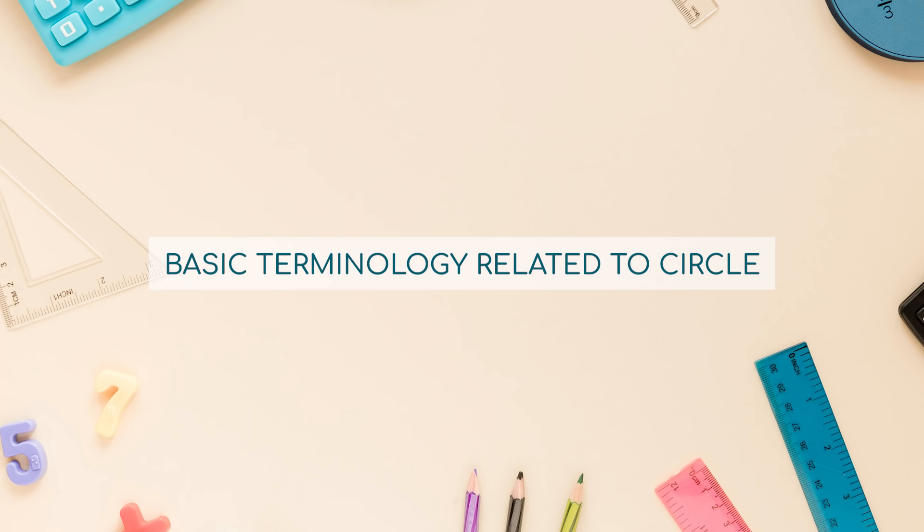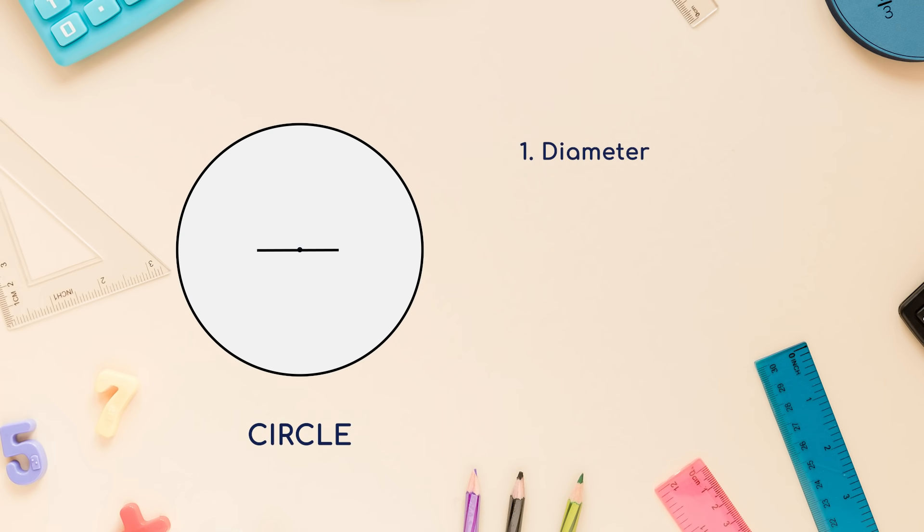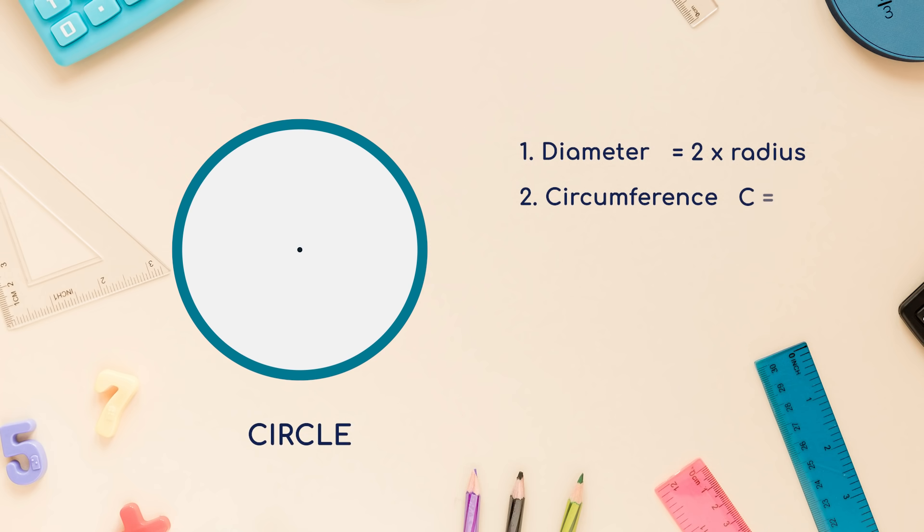Basic terminology related to circle: 1. Diameter, it is the longest chord of a circle and it is twice the radius. It's the chord which passes through center. 2. Circumference, it is the perimeter of a circle, given by C = 2πr.